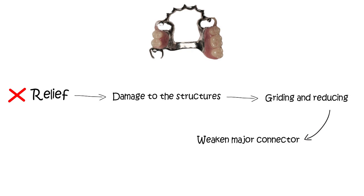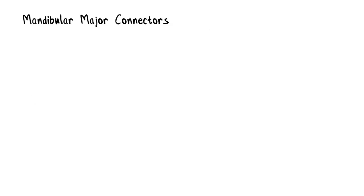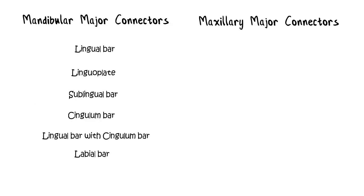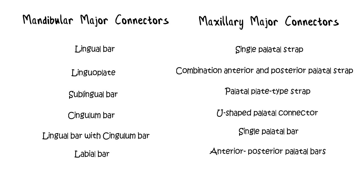Carefully designing the major connector with proper shape, design, location, and thickness can solve many problems. There are different types of mandibular and maxillary major connectors, each with unique design, indications, and contraindications, which will be discussed in other videos. However, the general guidelines for fabricating major connectors remain more or less the same.